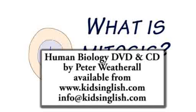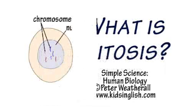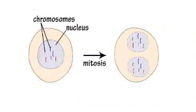Simple Science. What is mitosis? Mitosis is the process in which a cell separates the chromosomes in its nucleus into two identical sets of chromosomes in two nuclei.